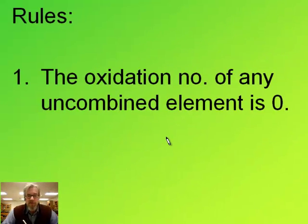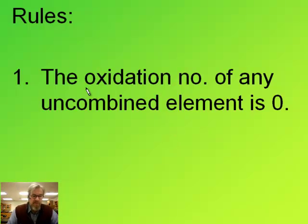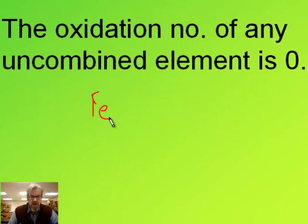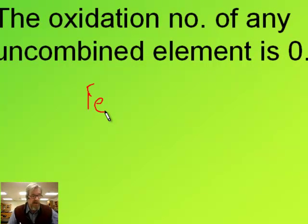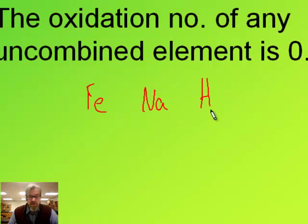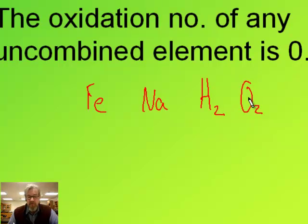Here are the rules for assigning oxidation numbers. First, the oxidation number of any uncombined element is zero. So if you had iron — Fe — that would be an oxidation number of zero. Or sodium, Na, oxidation number zero. Even if you have a diatomic like H2 or O2, those oxidation numbers are zero if they're uncombined with any other element.